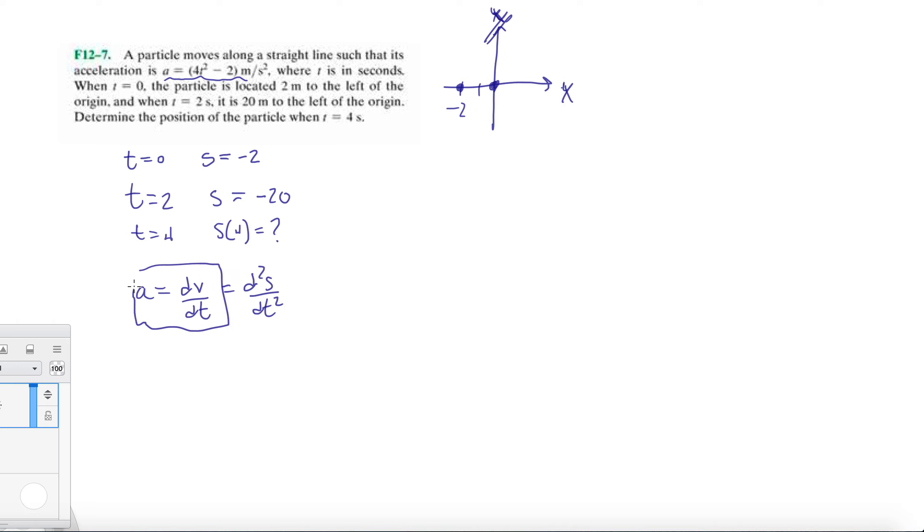So let's start here. So we have 4t squared minus 2 on the left hand side, and then dv/dt. And then we're just going to integrate both sides. And this would be dv, and we'll just do it in indeterminate integrals. So we're going to have 4t cubed over 3 minus 2t plus some constant c1 equals v.